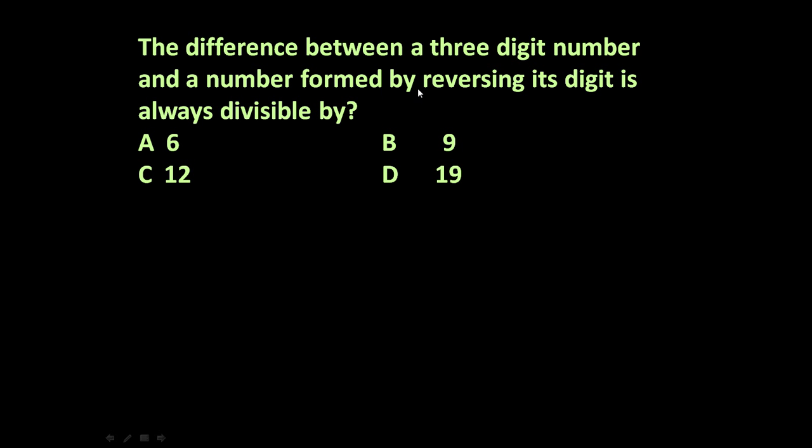a number formed by reversing its digits is always divisible by? Options: A) 6, B) 9, C) 12, D) 19. So if we have a three-digit number and we reverse that number, their difference is always divisible by what? Let us find out the solution.